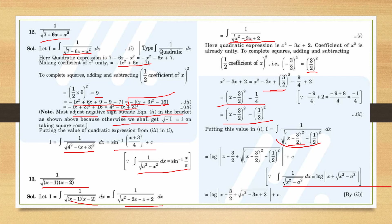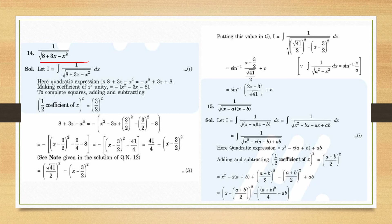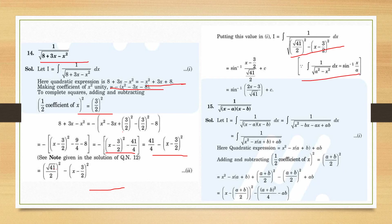Question 14: integral of 1/√(8 + 3x − x²). Take negative sign common: −(x² − 3x − 8). Add and subtract (3/2)² to get −((x − 3/2)² − 41/4). Flip to avoid negative under root: 41/4 − (x − 3/2)² = (√41/2)² − (x − 3/2)². This is the form a² − x², giving sin⁻¹((2x − 3)/√41) + C.